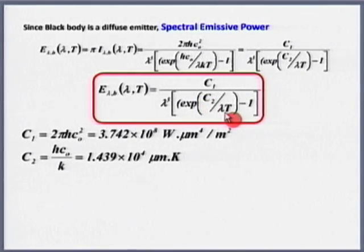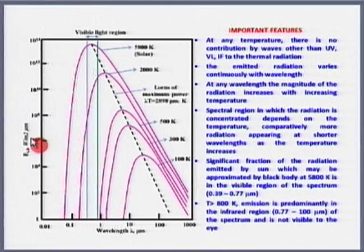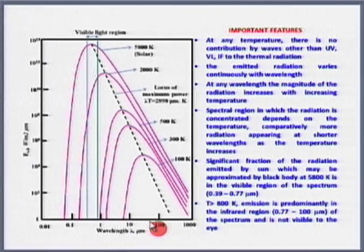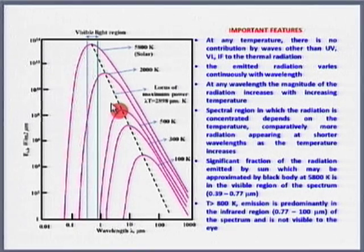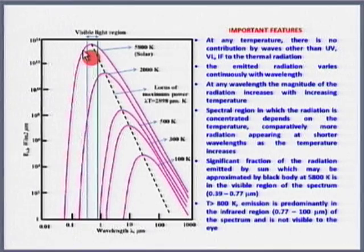From the Planck's distribution plot, for all wavelengths lower than about 0.08 μm and above about 1000 μm, the contributions to thermal radiation are negligibly small. That is why only infrared, visible, and a little ultraviolet light are said to be responsible for thermal energy — this can only be explained through Planck's distribution.